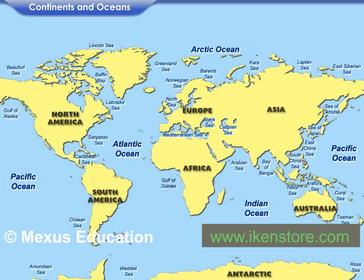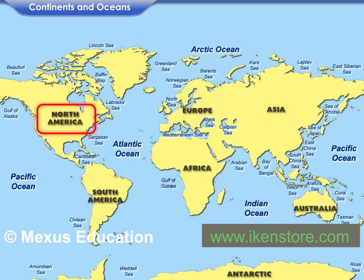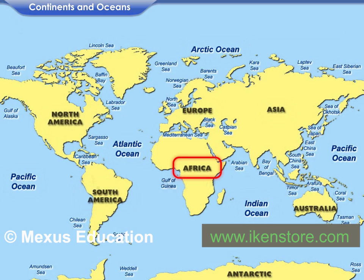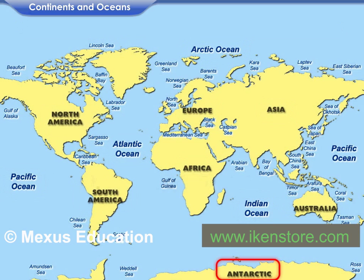The names of the seven continents are Asia, Europe, North America, South America, Africa, Australia and Antarctica.